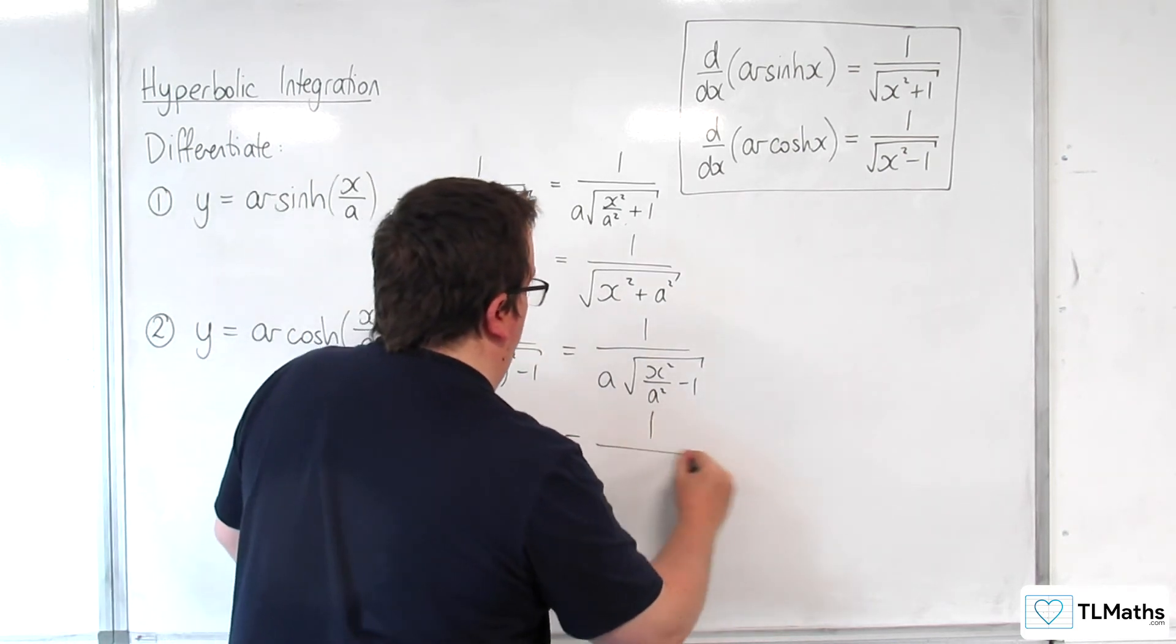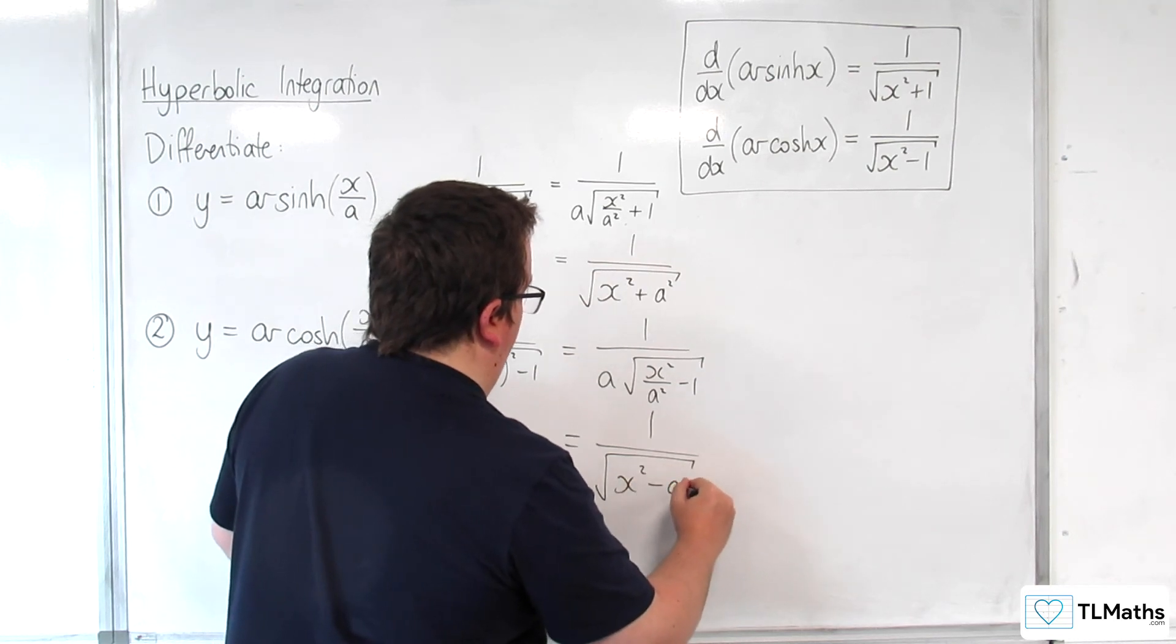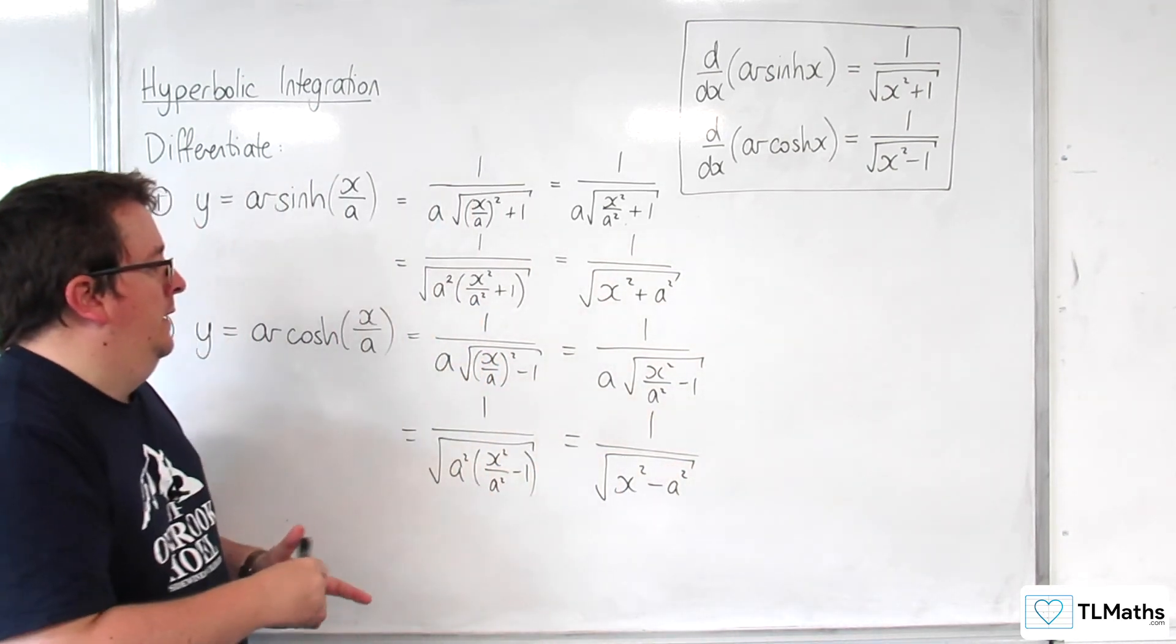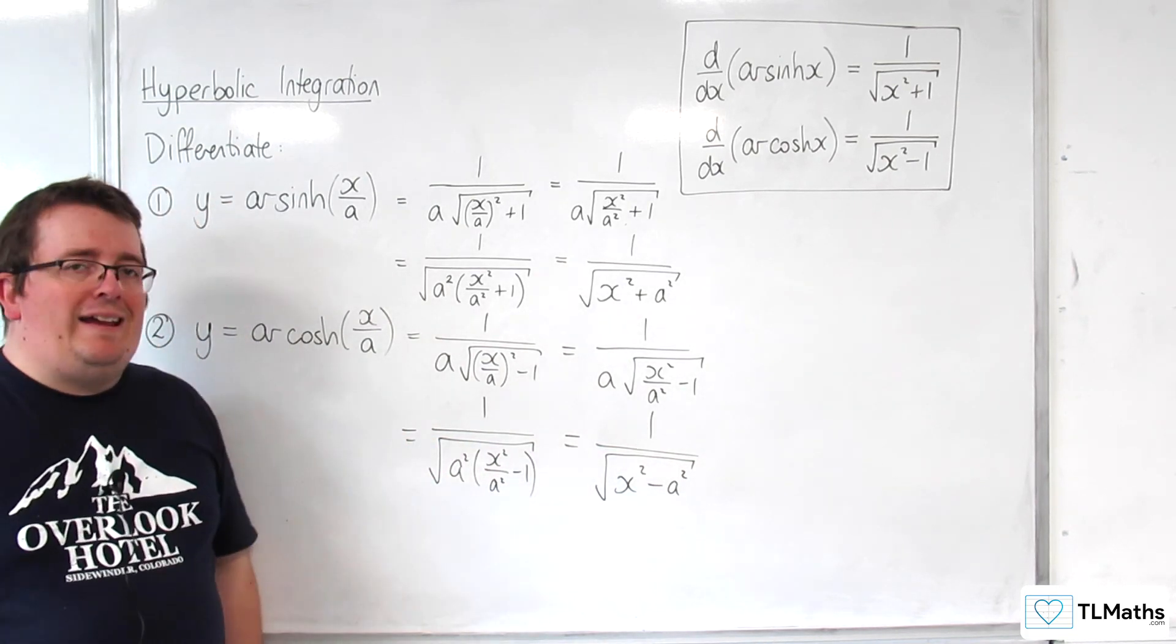And so we've got 1 over the square root of x squared, take away a squared. And so that is the derivative of arccosh of x over a.